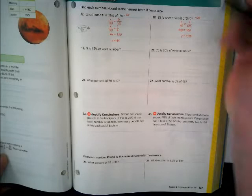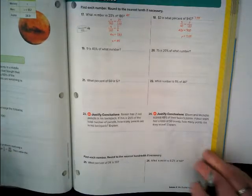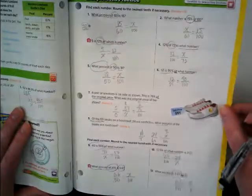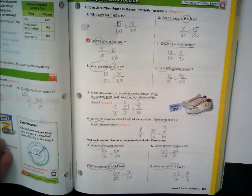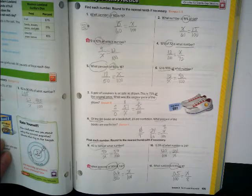And finally, what number is 0.5% of 8? I'm sorry, I read that wrong. So we're going to start with 0.5%. What number is 0.5% of 8? That means 8 is our whole. And we don't know what our number is.